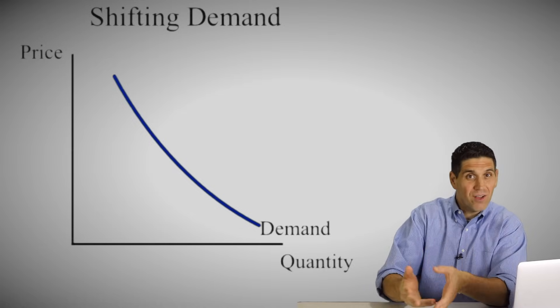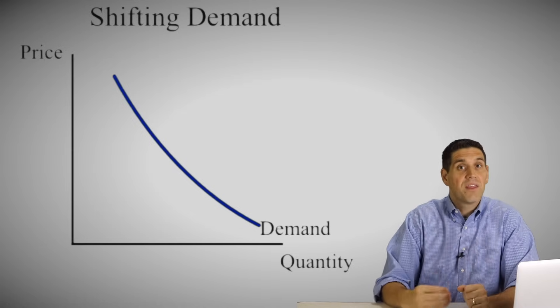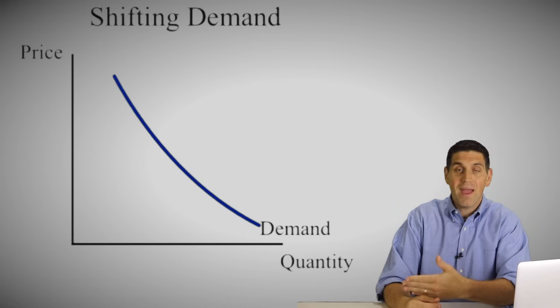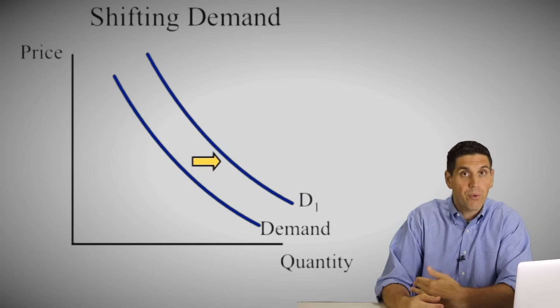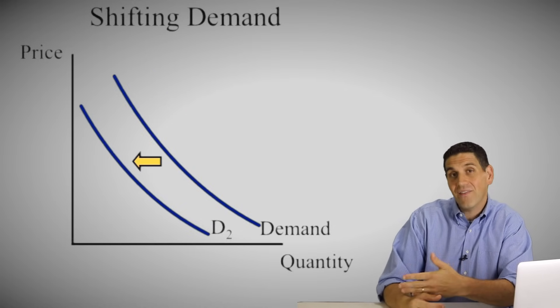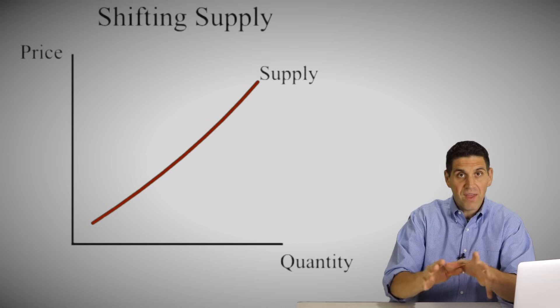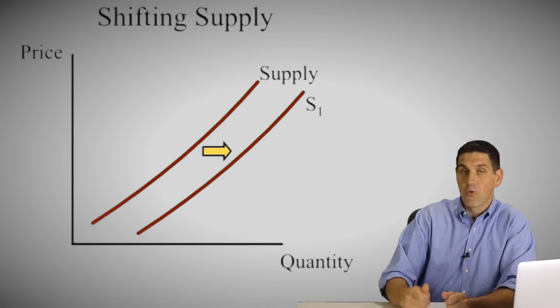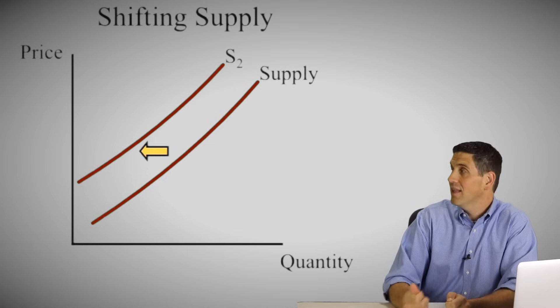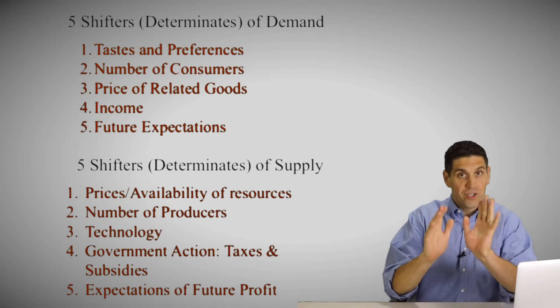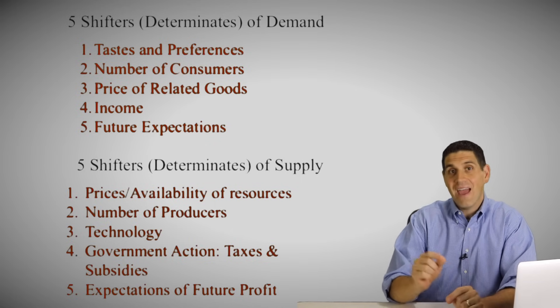But when there's a change in something other than the price of the actual product, then the curve does shift. The demand curve shifting to the right is an increase in demand; a shift to the left is a decrease in demand. The same thing for supply: right is an increase in supply, left is a decrease in supply. There are also five shifters of demand and five shifters of supply. But just knowing the list of shifters isn't enough — you have to be able to draw the graph and show what happens to price and quantity.